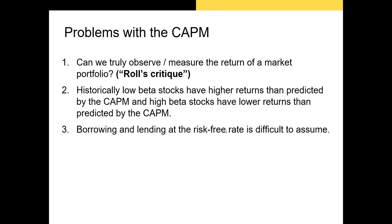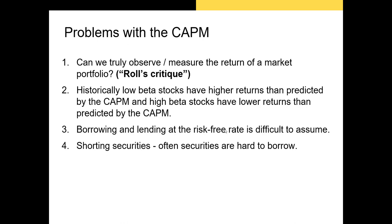Most investors are not able to borrow and lend at the risk-free rate or short securities. This means that there's market friction and these investors are less likely to be able to profit on valuable information. These frictions make the market less efficient and less able to price in new information.